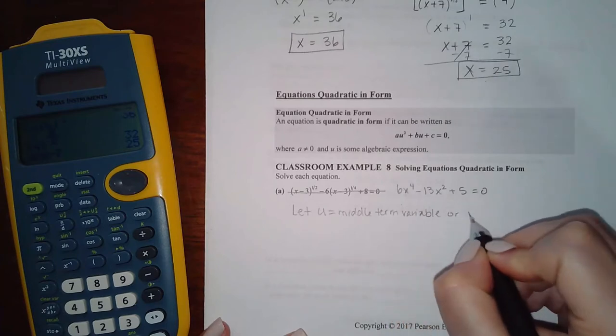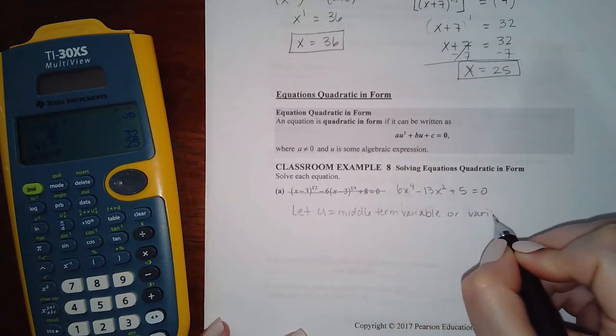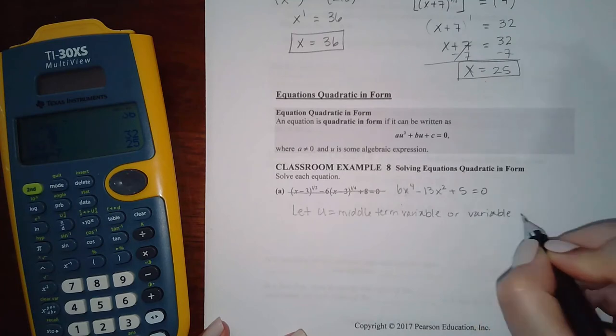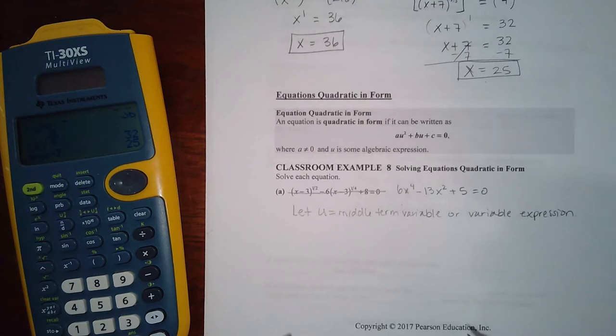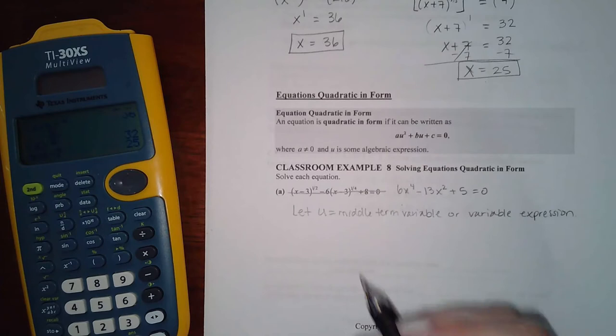Variable or variable expression, but in this case it's just a variable. Basically what that means is u equals the middle guy without the coefficient.